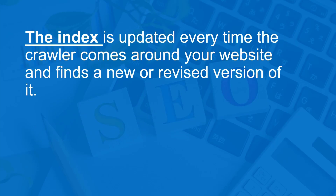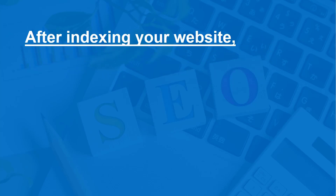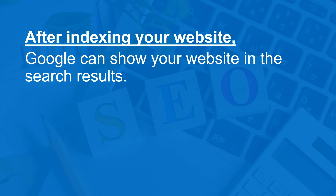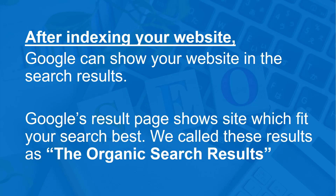The index is updated every time the crawler comes around your website and finds a new or revised version of a page. After indexing your website, Google can show your website in the search results. The index pages that fit your search are called the organic search results.